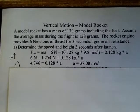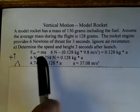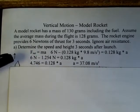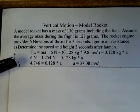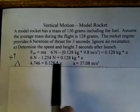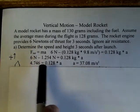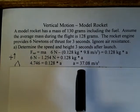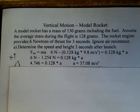Subtracting the downward weight from the six newton thrust, we get a net upward force — so the rocket will be accelerating upward. The net force is a positive number. Dividing: 4.746 divided by 0.128 gives an acceleration of 37.08 meters per second squared. This is a pretty lofty number.